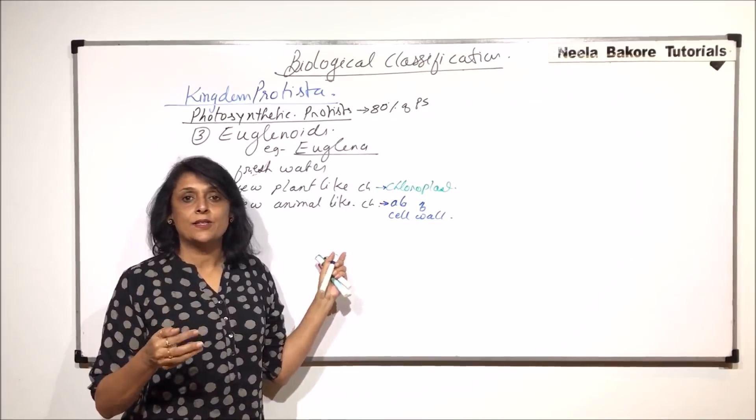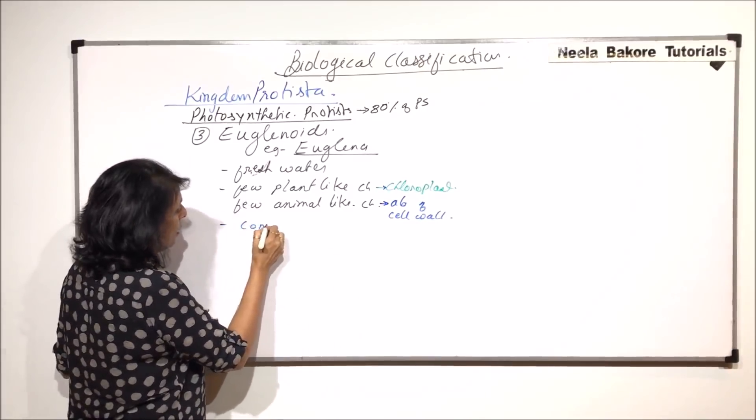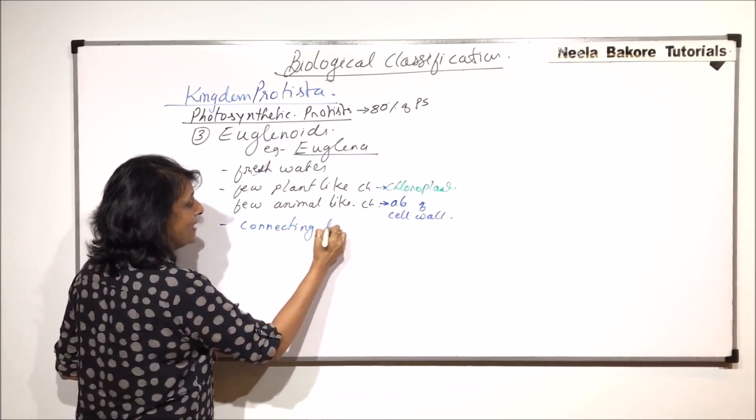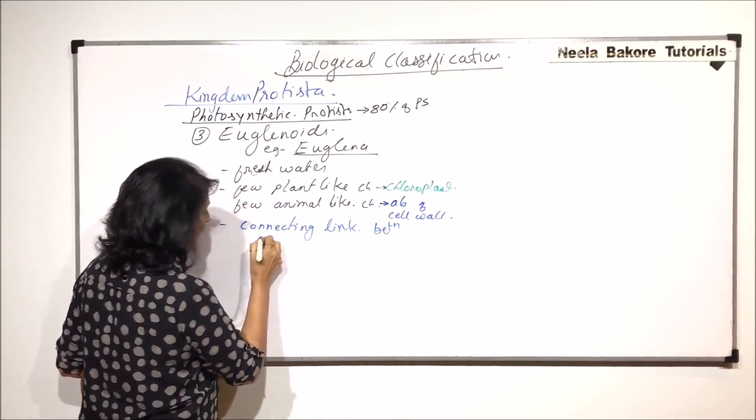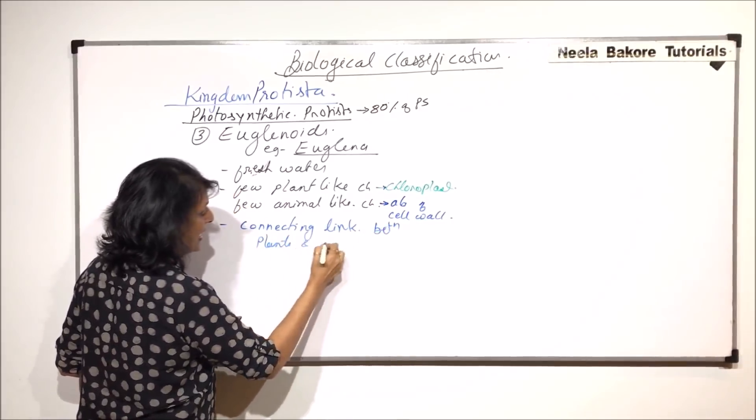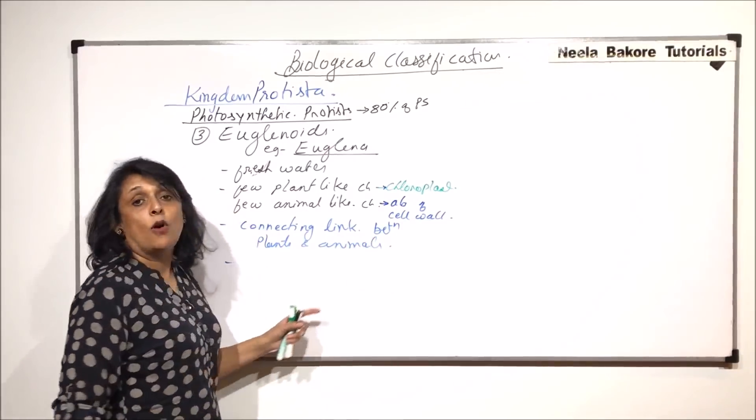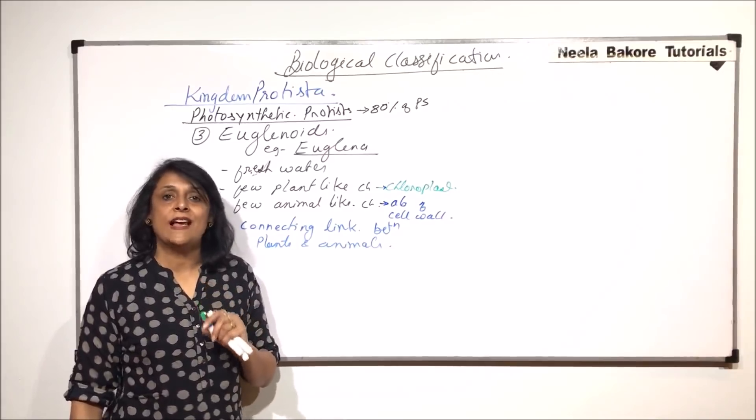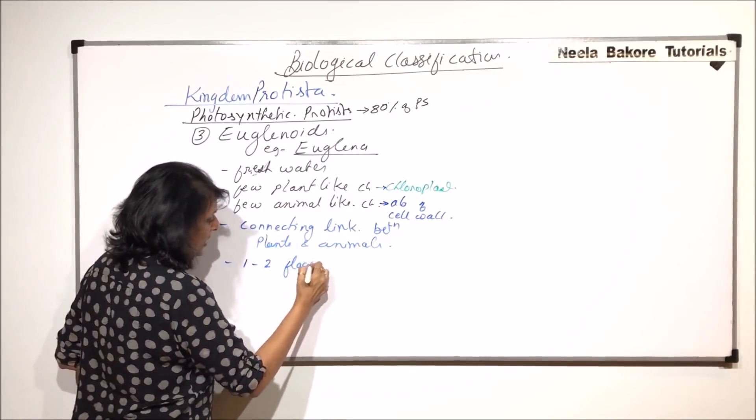There are certain plant-like characters and certain animal-like characters, and that's why we call these euglenoids the connecting link between plants and animals. Normally they have two flagella but can have a single flagellum also, so one or two flagella.